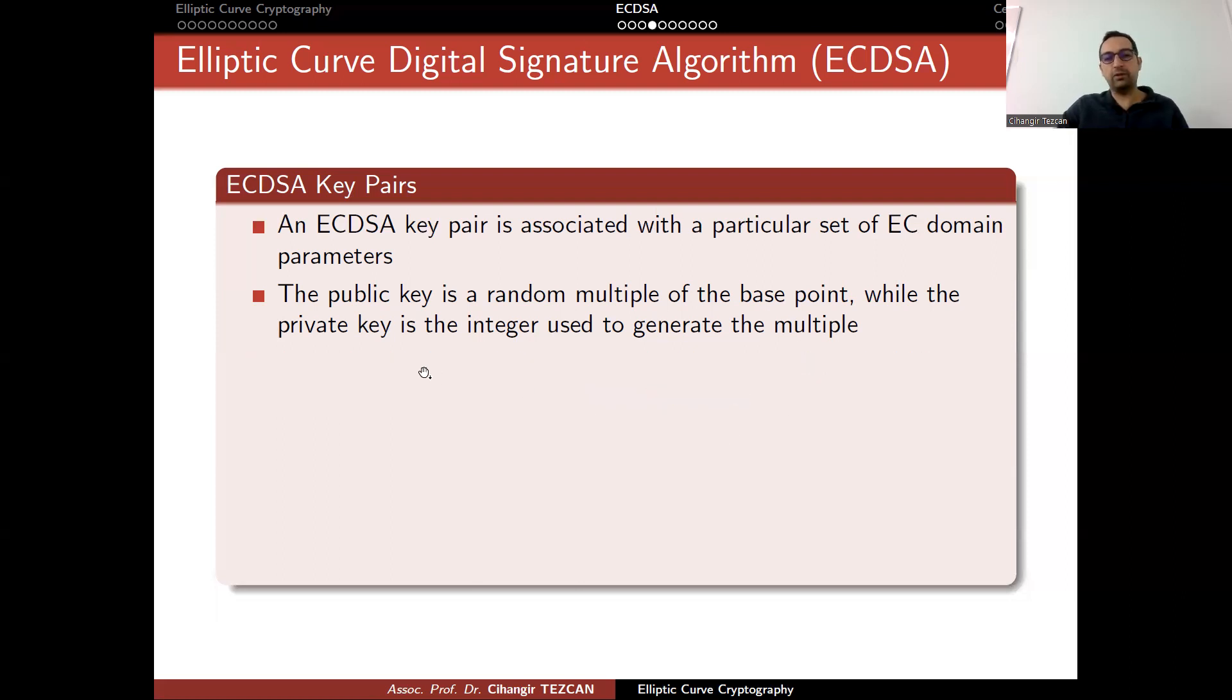An entity A's key pair is associated with a particular set of elliptic curve domain parameters, as defined like this. But again, if you use the same domain parameters for everybody, then instead of focusing on all of these values, you can simply focus on your public key.